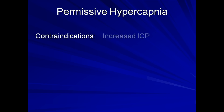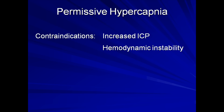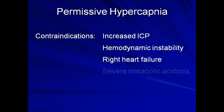There are a number of important contraindications to permissive hypercapnia. Hypercapnia induces cerebral vasodilation, which may further increase intracranial pressure. Hypercapnia can induce systemic vasodilation, which may worsen hypotension. It may increase pulmonary vascular resistance, further worsening right ventricular dysfunction. And finally, a combined respiratory acidosis and severe metabolic acidosis may lead to an unacceptably low arterial pH, which can inhibit numerous processes at the cellular level.